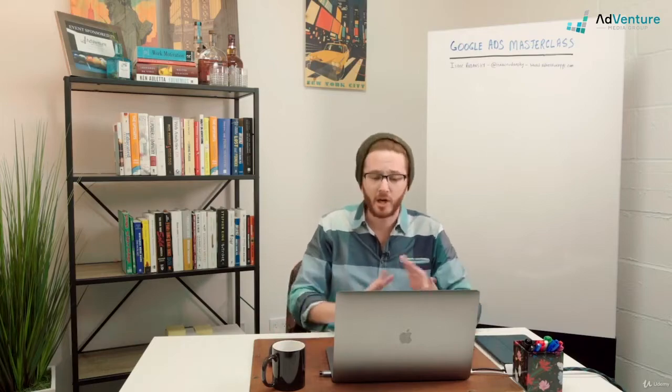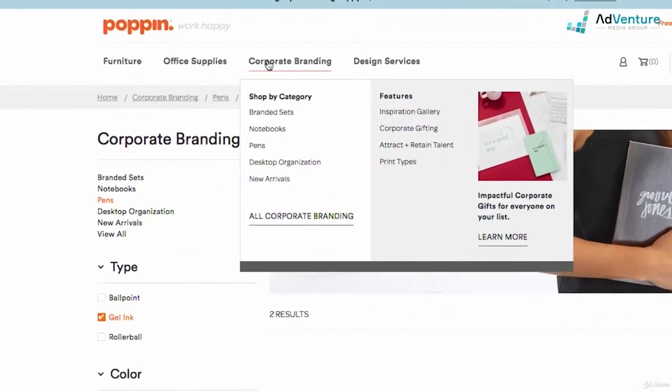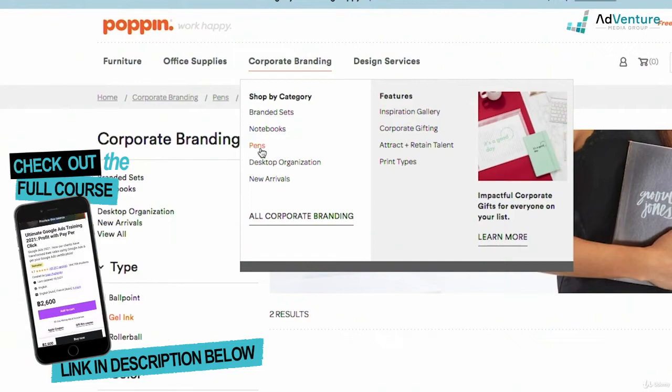What I'm saying is that I think the campaign structure here, it would be appropriate to have corporate branding at the top as a campaign and then just pens as an ad group. And users can then find whether they want gel ink, ballpoint, or rollerball pens.